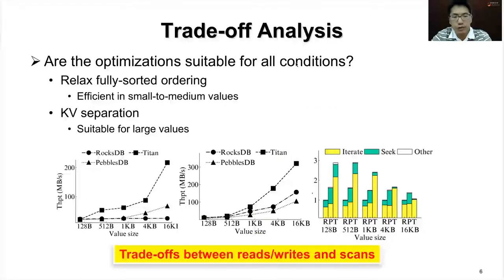After learning those ideas, we want to ask: are those optimizations suitable for all conditions? We conducted an experiment to test the performance of different operations under different value sizes. The results show that the answer is no. Relaxing fully sorted order is only efficient for small to medium values, and key-value separation is suitable for large values. In conclusion, there are trade-offs between reads, writes, and scans in these optimizations.